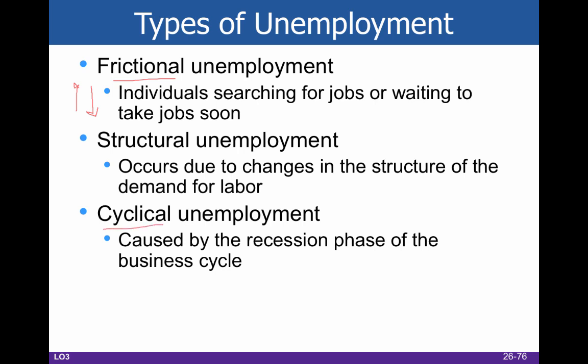Cyclical unemployment is when the economy goes down — going back to those business cycles. Cyclical unemployment is the kind that happens during the contraction. If we were back at the peak, then you would be employed; once it comes back up, these people will be rehired. But for the time being, because we're in an economic downturn, these people lose their job. These are typically layoffs as opposed to people who lose their job because they're bad at it or because they are structurally unemployed.